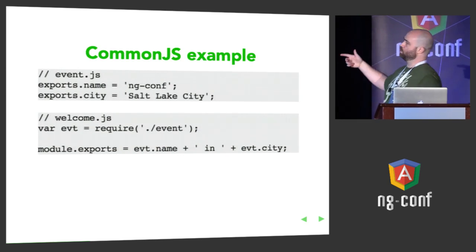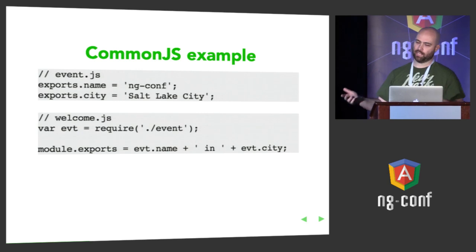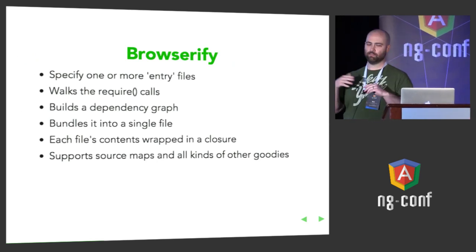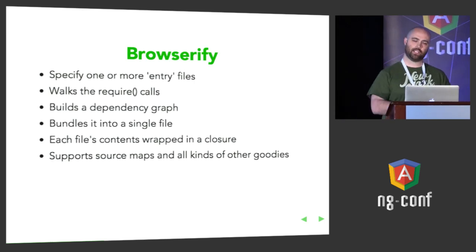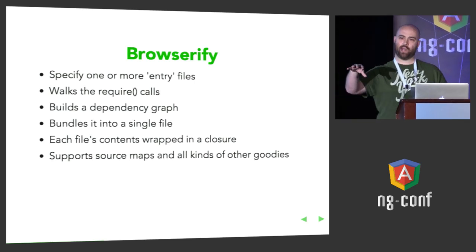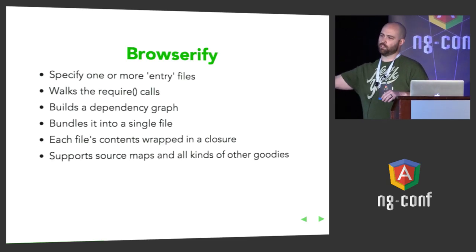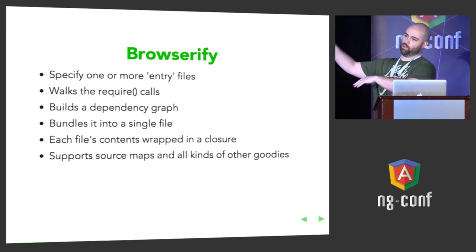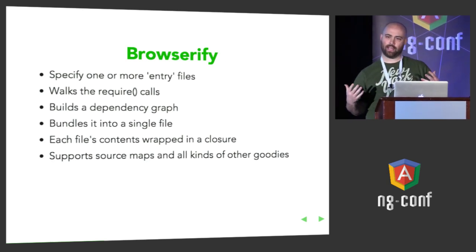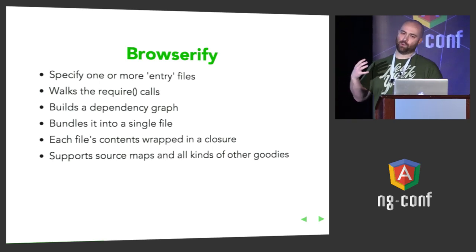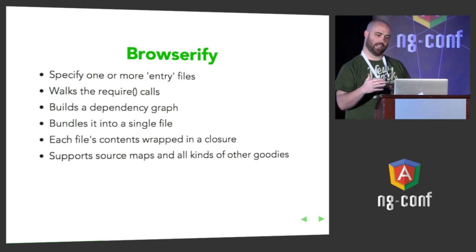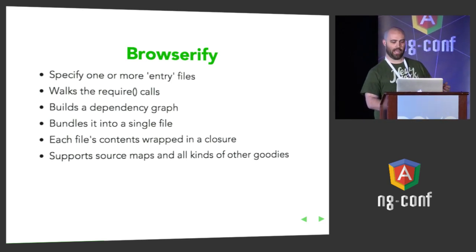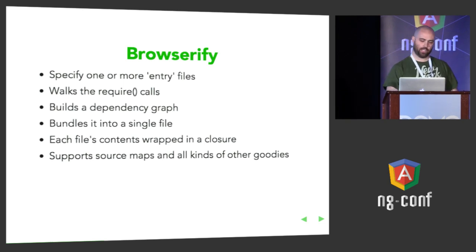You can also export multiple values from a module if you need to by using the exports object directly. In a bulleted list, overly simplified, what Browserify does: you give it an entry file and say start here, read all of my require statements, and walk those called files to build up my dependency graph. Your entry file maybe requires two other files, those two require three more, and on and on. It bundles it all into a single file, but it doesn't just concatenate it into one big blob — it actually wraps the contents of each file in a closure, and that's essentially how it makes the synchronous loading work. It also supports source maps so that you debug your single files, not the giant output.